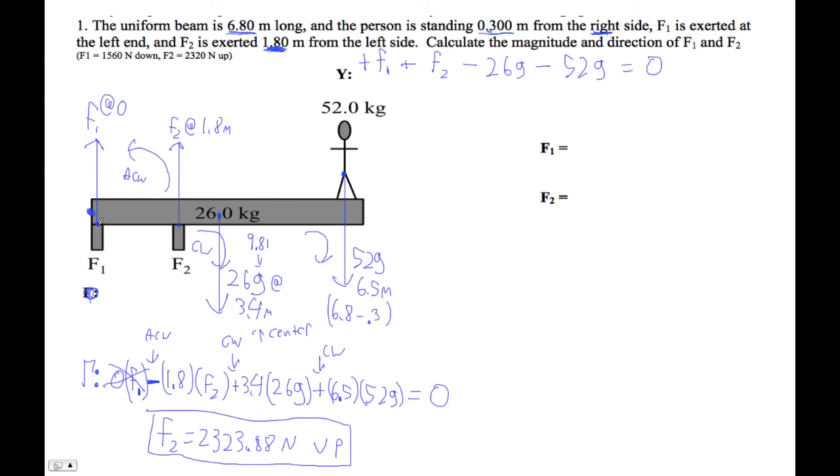But if it's a pivot point, it's possible that this could be a downward force. So let's set this thing up. We're going to take that 2323.88 and plug it in for F2 here. So this formula becomes F1 plus 2323.88 minus 26 times 9.8 minus 52 times 9.8 equals 0. Plug it into that equation and then solve for F1. I'm going to go 26 times 9.81 plus 52 times 9.81, then subtract the answer I just got, and I get minus 1558.7.